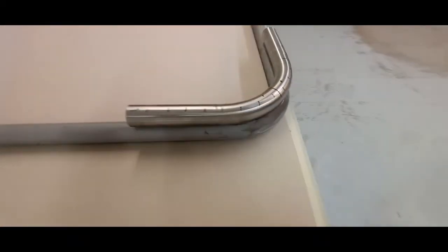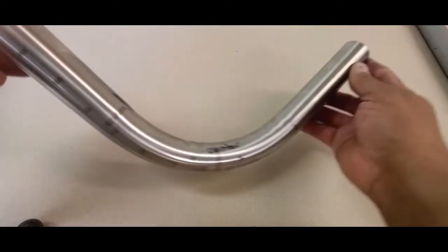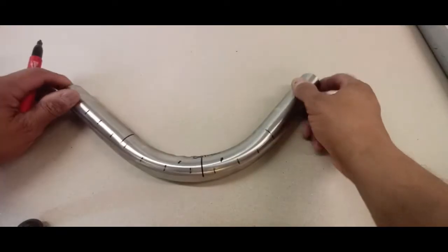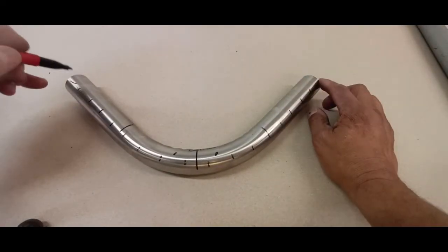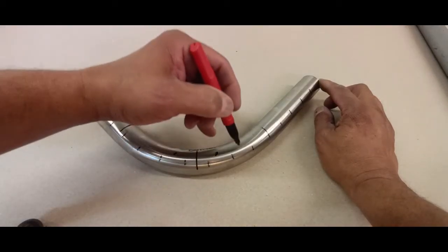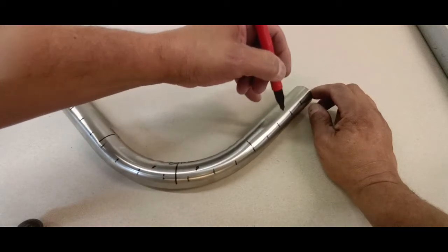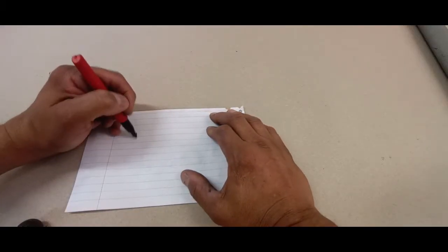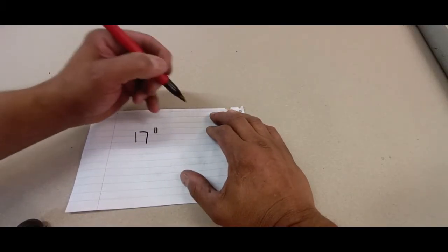Double checking in on the actual piece we're bending and here's where the math comes in. Three, four, five, six, seven, eight, nine, ten, eleven, twelve, thirteen, fourteen, fifteen, sixteen, seventeen. Now we know it takes 17 inches for this OD and tubing to create a 90 degree bend.